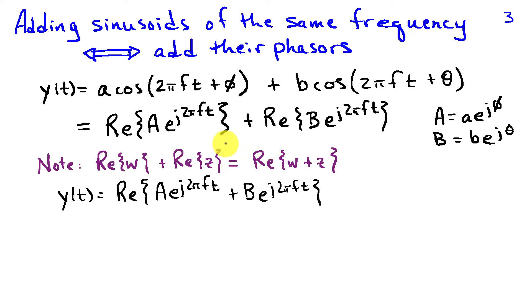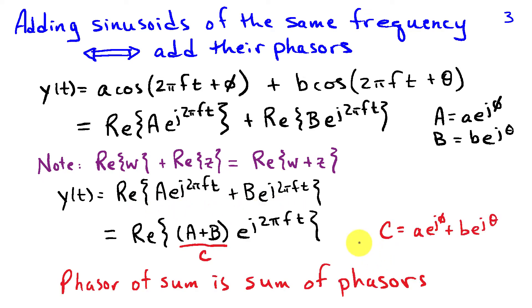Now when we're adding complex numbers, you can add the real parts or you can take the real part of the sum, because when you add complex numbers you add the real parts and you add the imaginary parts. Here I have a sum of the real parts. Well, that's equivalent to the real part of the sum, and we can factor out the e to the j 2 pi ft from both terms to have A plus B, we'll call that a new phasor C, times e to the j 2 pi ft. C is the sum of the phasors of the individual sinusoids. The phasor of the sum is the sum of the phasors.